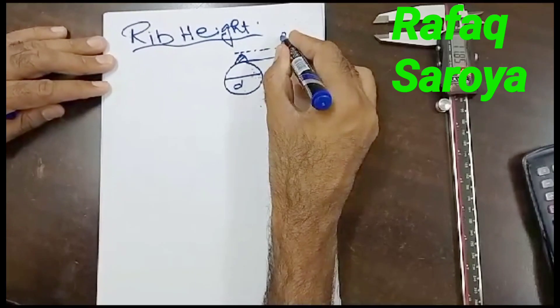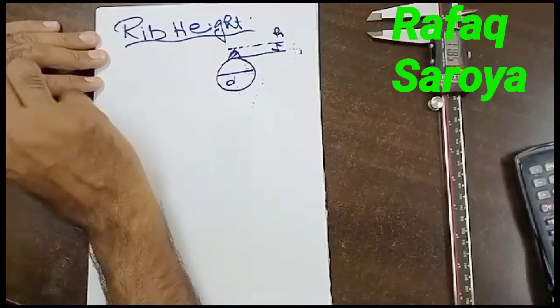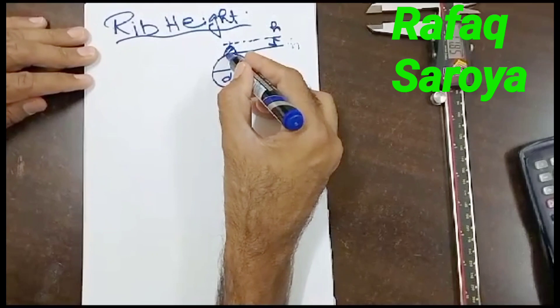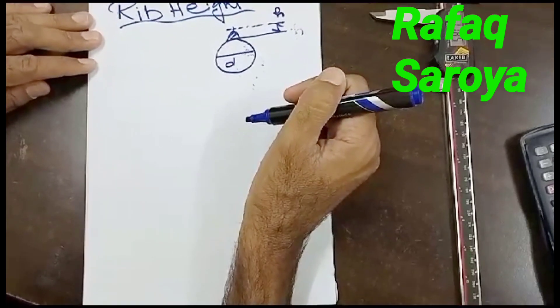The difference between these two is known as the height. This is the height of the rib. So we can say that the distance between the highest point of the rib to the cross-sectional area is known as the height of the rib, which is being represented by H, and it is not a constant.